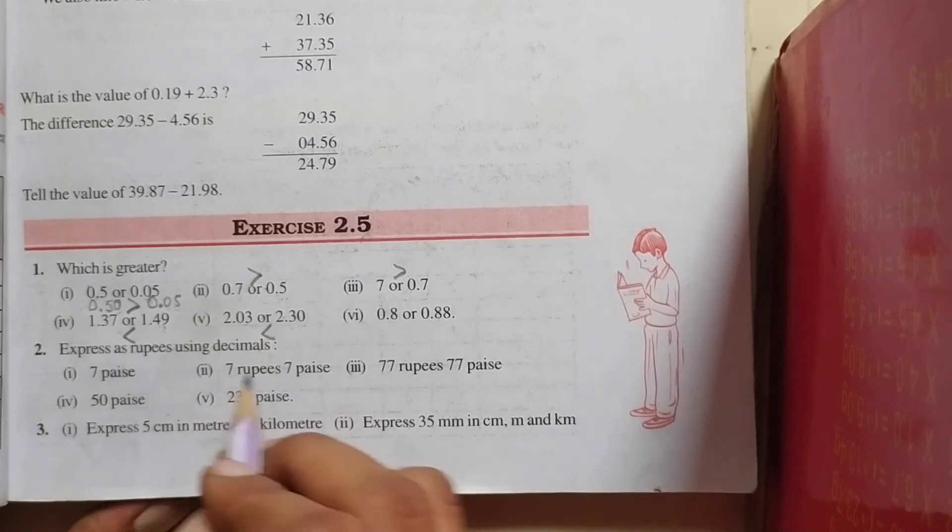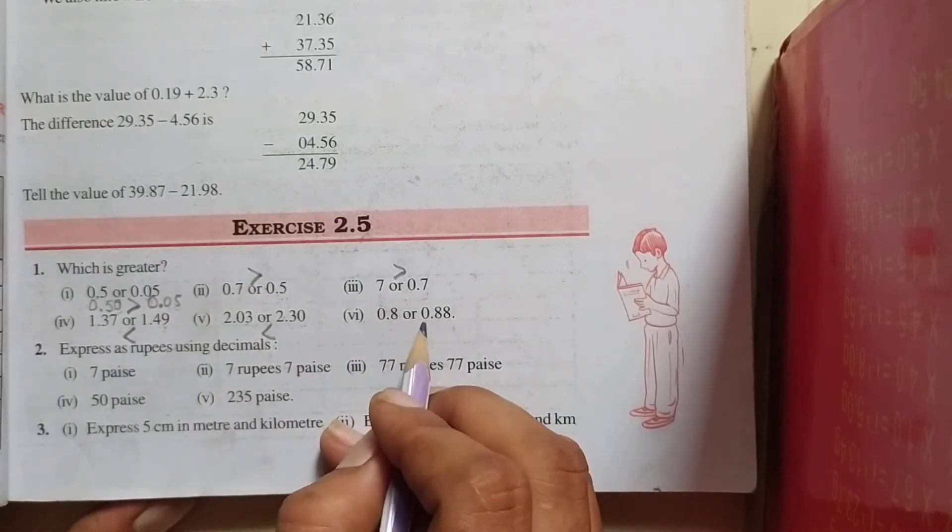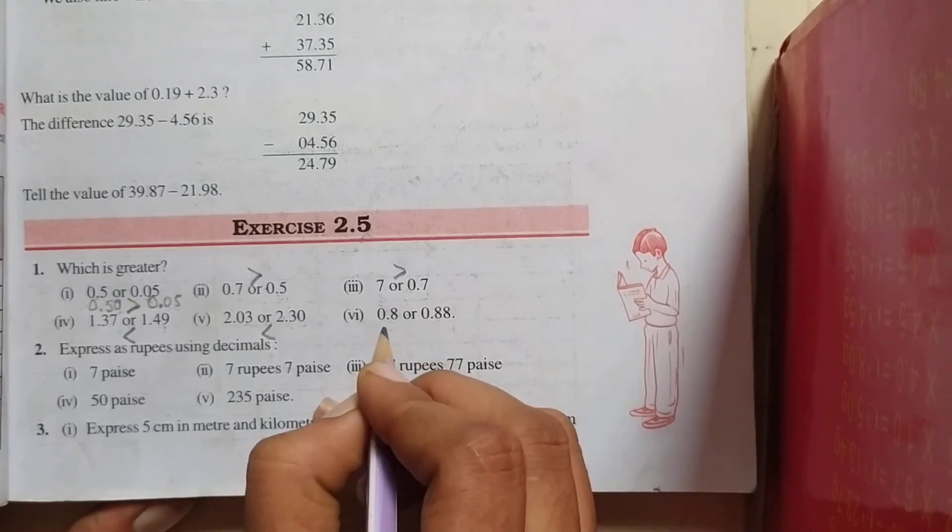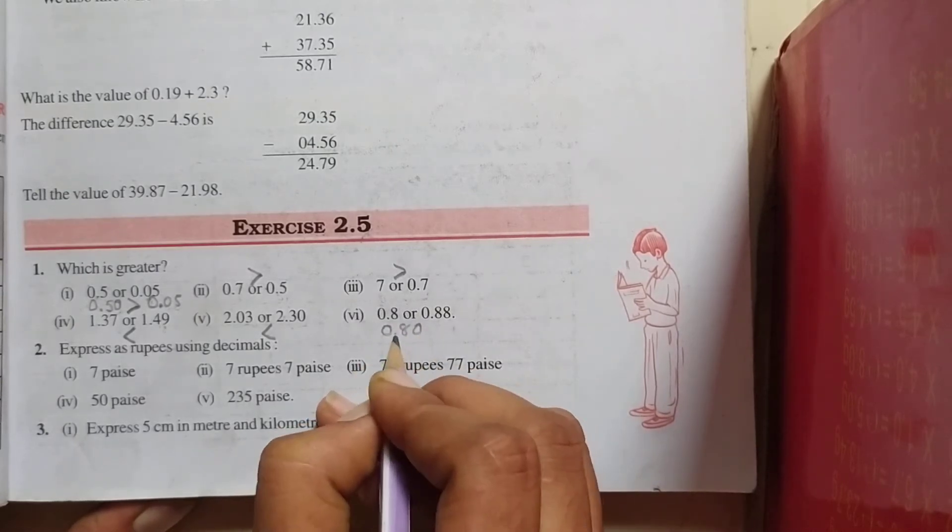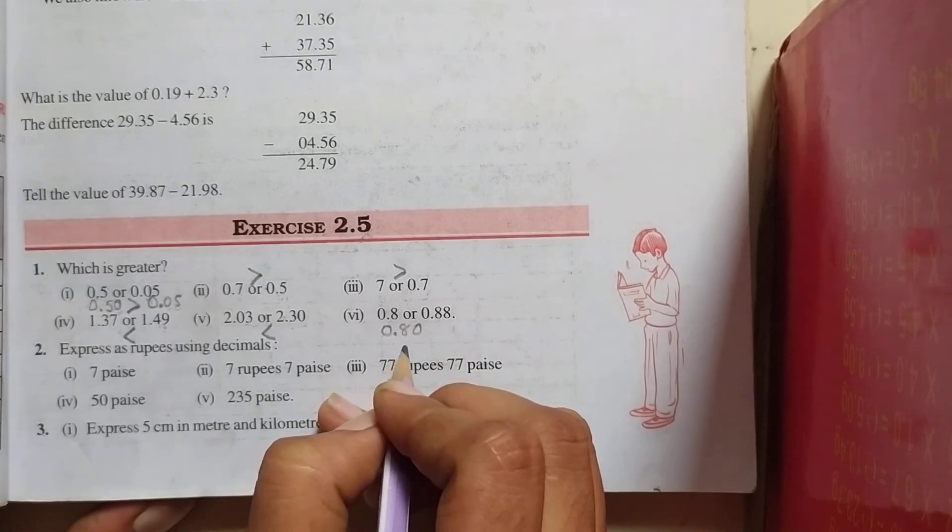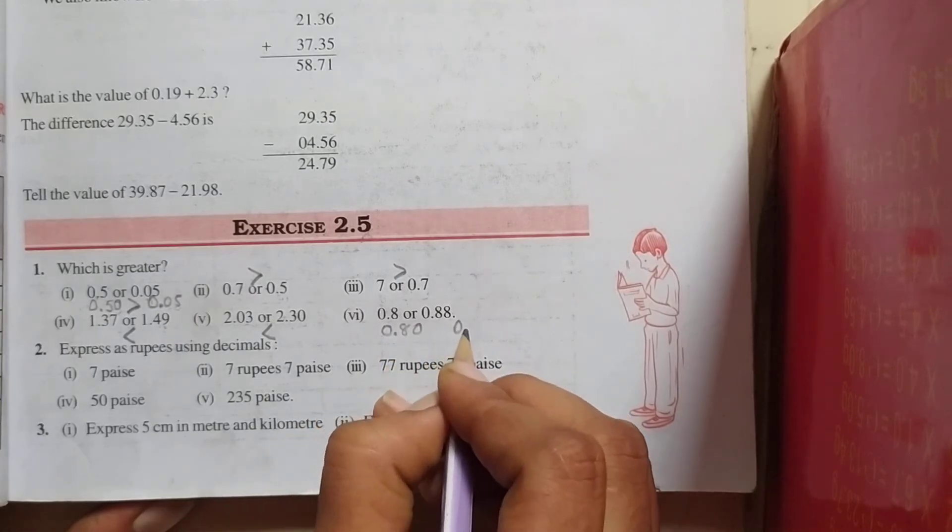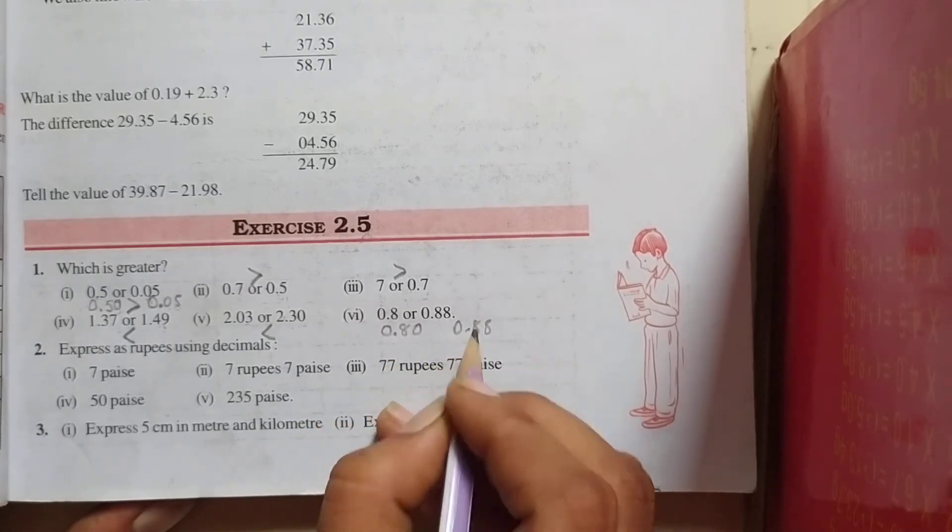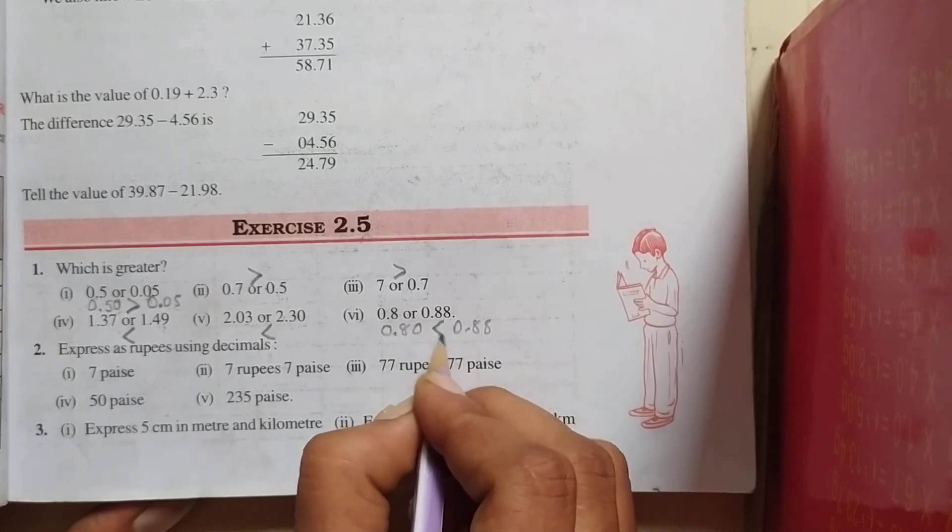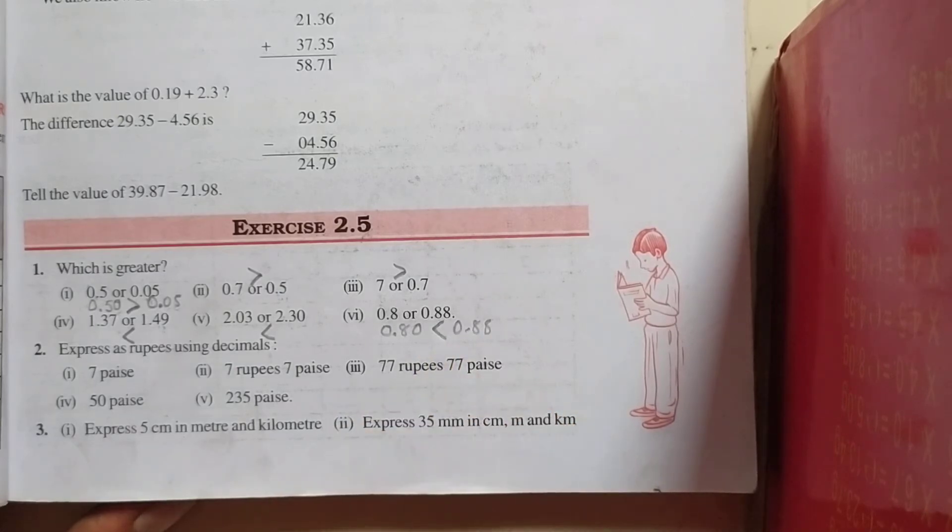0.8 or 0.88. So, first of all, convert into like decimals. So, 0.80 and 0.88. So, 0.88 is greater. Okay, students.